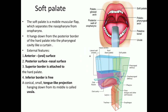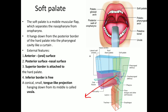The soft palate is a mobile muscular flap which separates the nasopharynx from the oropharynx. The anterior surface is the oral surface, and the posterior surface is the nasal surface. The superior border is attached to the hard palate. The inferior border is free, and in its middle there is a tongue-like projection called the uvula.